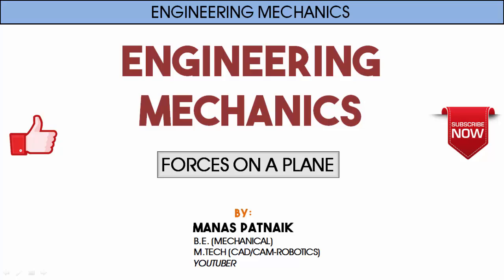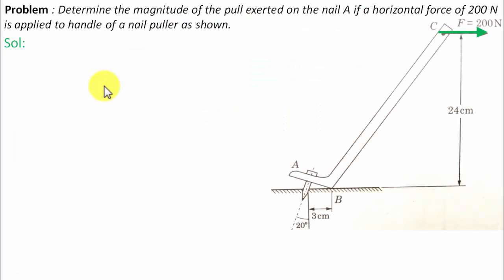Hi there guys, hope you're doing well. This is your friend and tutor Manas. Let's see what this problem has in store. Determine the magnitude of the pull exerted on the nail if a horizontal force of 200 Newton is applied to the handle of a nail puller as shown.